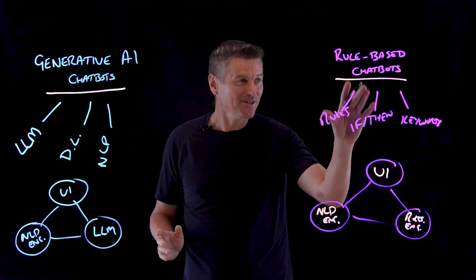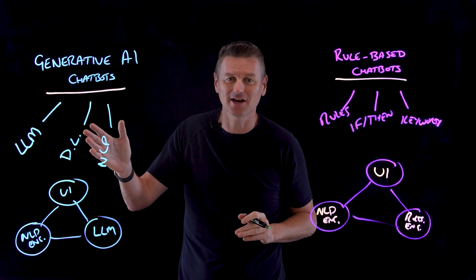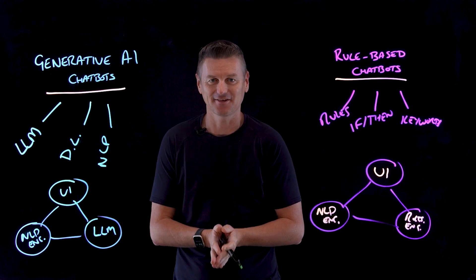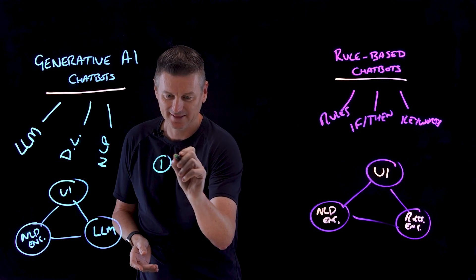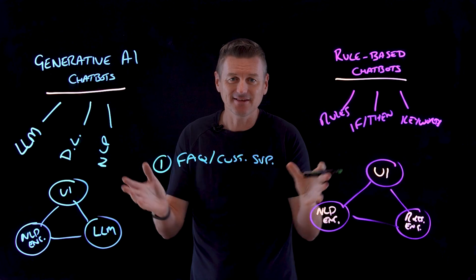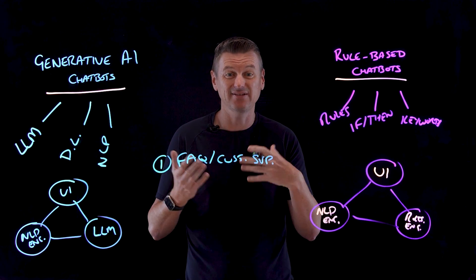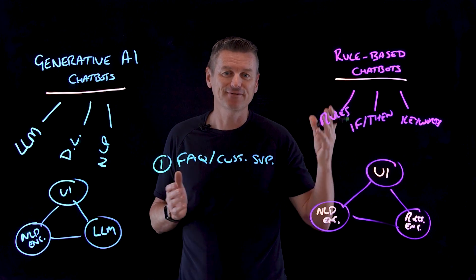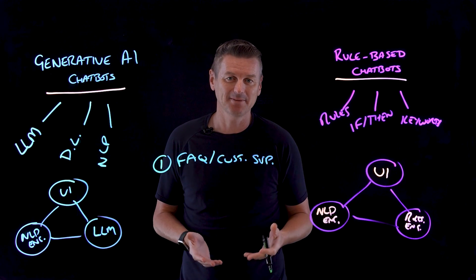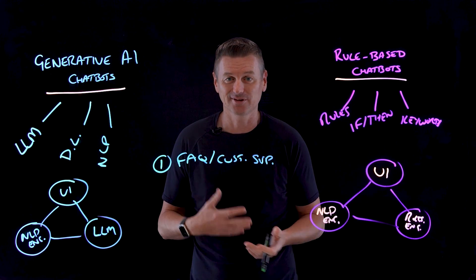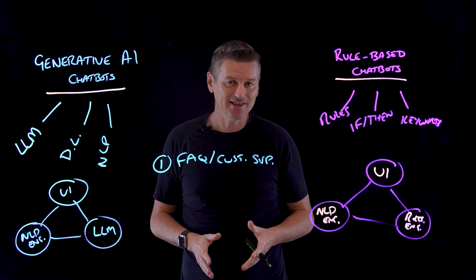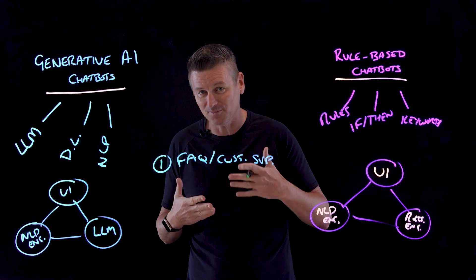So does this spell the end for rule-based chatbots? Are generative AI chatbots always the better option? Well, the answer depends on your use cases. Consider frequently asked questions and customer support scenarios. Where user queries are relatively simple and predictable, a rule-based chatbot can be an efficient and cost-effective solution. For instance, in a customer support scenario for an online store, a rule-based chatbot can quickly provide answers to frequently asked questions about shipping, returns, or product information. A generative AI chatbot could fulfill this use case too, but this could lead to increased complexity and cost without a significant improvement in performance.